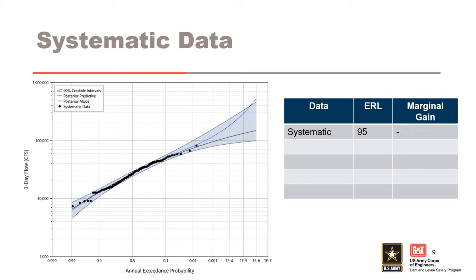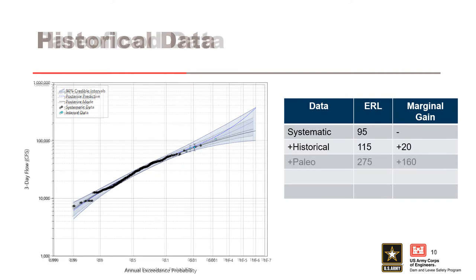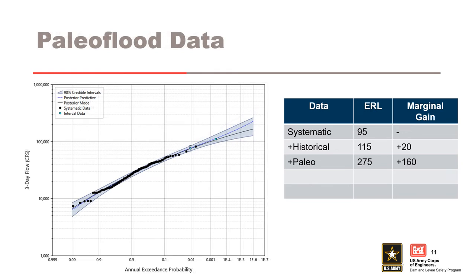Over the next few slides, we'll walk through an example to show how additional data increases the effective record length. We start with a set of systematic data that has a record length of 95 years. When we add historical information in the form of flow intervals and perception thresholds, we increase our effective record length by 20 years to 115. Next, we add paleo flood information in the form of a paleo stage indicator as a flow interval and a paleo non-exceedance bound as a perception threshold, which gives us an additional increase of 160 years, resulting in a total effective record length of 275.